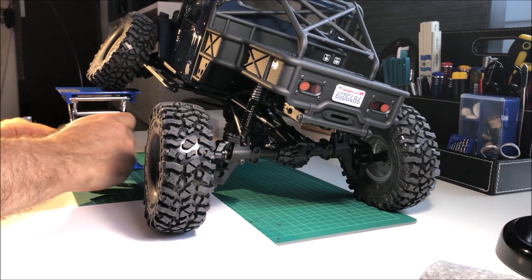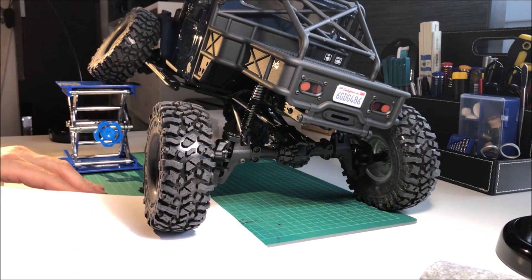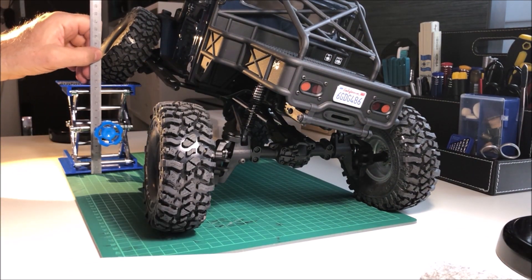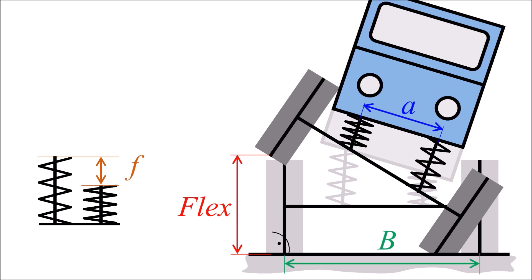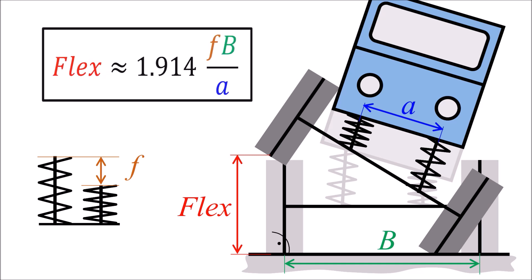The flex can be measured by lifting one wheel and tilting the crawler until any other wheel tends to take off. The flex is a function of the maximally possible deflection in the springs, the lateral distance between the springs, and the lateral wheelbase. It can be approximated by this simplified formula.